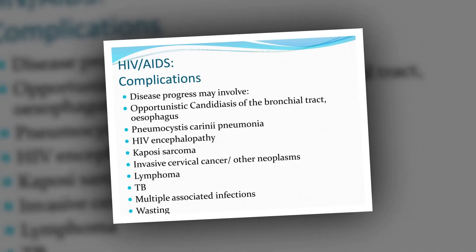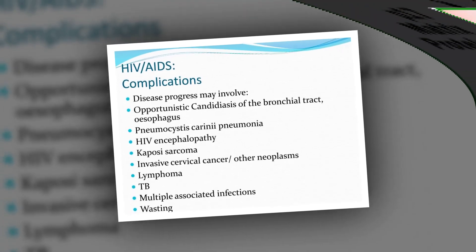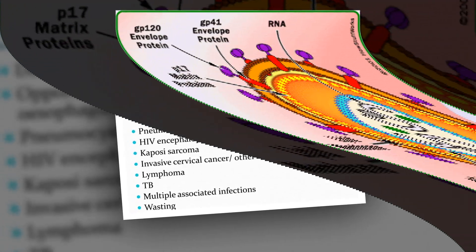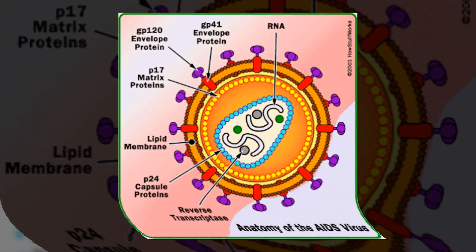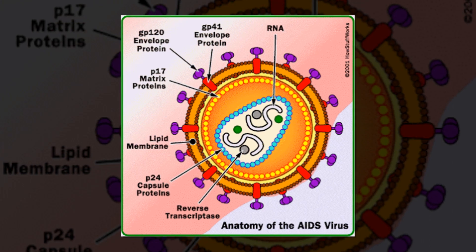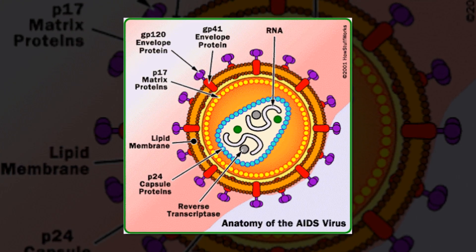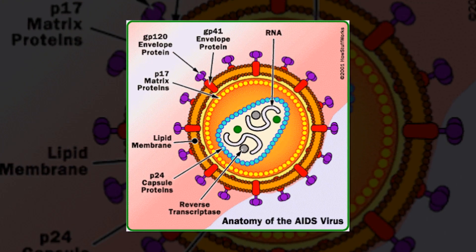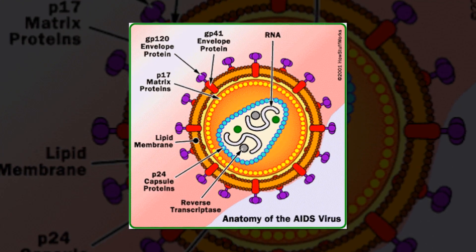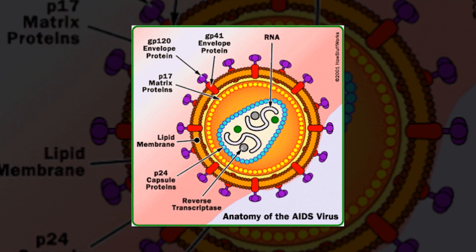Advanced HIV and AIDS can cause other medical conditions like liver and kidney disease. You can also have some brain-related issues like forgetfulness, depression, anxiety, and dementia.